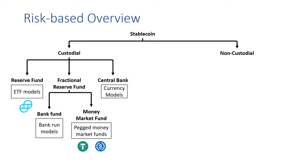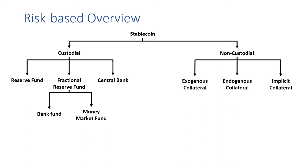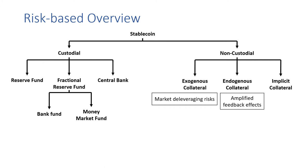On the non-custodial side of the tree, we have stablecoins with on-chain collateral types. One of these is exogenous collateral, which encounters market deleveraging risks. We also see types of endogenous collateral, which have amplified feedback effects because the value of the collateral is self-referential with the health of the protocol itself — in other words, the collateral pricing is endogenous. And also implicit collateral, which works through incentives without explicit obligations or explicit collateralization.